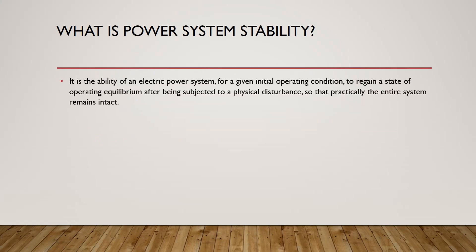Power system stability is the ability of an electrical power system, for a given initial operating condition, to regain a state of operating equilibrium after being subjected to a physical disturbance, so that the entire system remains intact. A power system is considered stable when it is able to gain a state of equilibrium — for example, reaching a steady state.